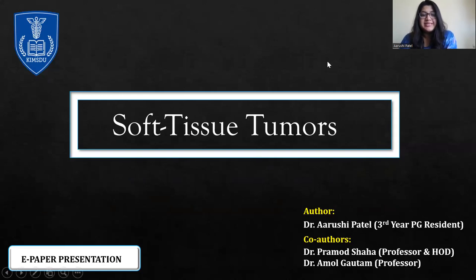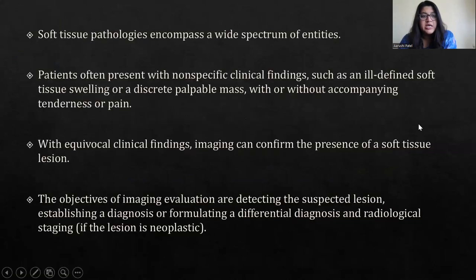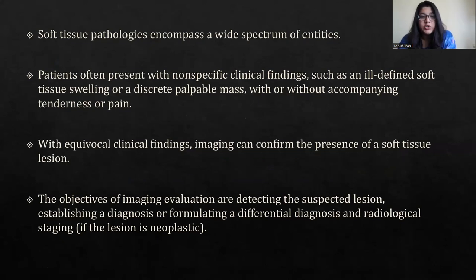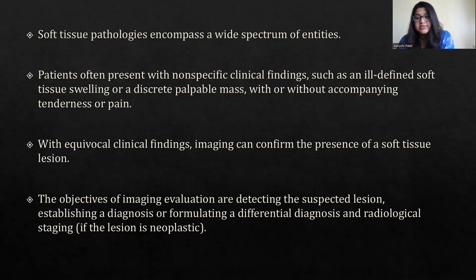Good morning everyone. I am going to be presenting a paper on soft tissue tumors. Soft tissue pathologies encompass a wide spectrum of entities. Patients often present with nonspecific clinical findings such as ill-defined soft tissue swelling or discrete palpable mass, with or without accompanying tenderness or pain. With equivocal clinical findings, imaging can confirm the presence of a soft tissue lesion. The objectives of imaging evaluation are detecting the suspected lesion, establishing a diagnosis or formulating a differential diagnosis, and radiological staging if the lesion is neoplastic.